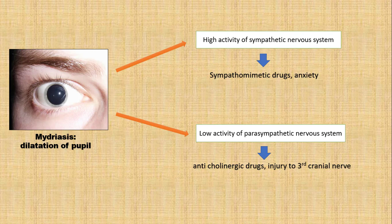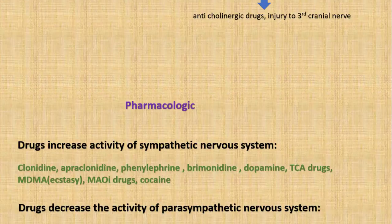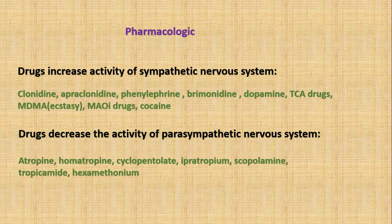Pharmacological causes of mydriasis include drugs that increase sympathetic activity: clonidine, apraclonidine, phenylephrine, brimonidine, dopamine, PCP, MDMA or ecstasy, and MAO inhibitor drugs and cocaine. Drugs that decrease parasympathetic activity include: atropine, homatropine, cyclopentolate, tropicamide, scopolamine, and hexamethonium.